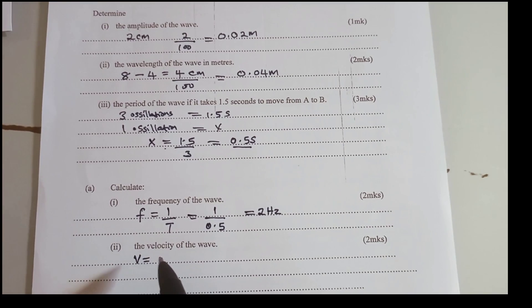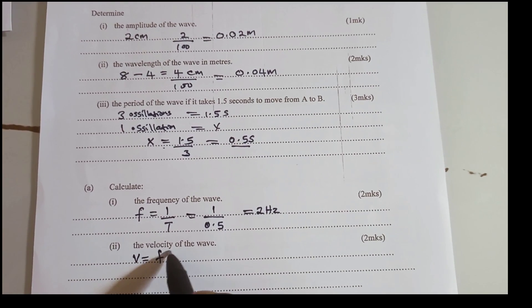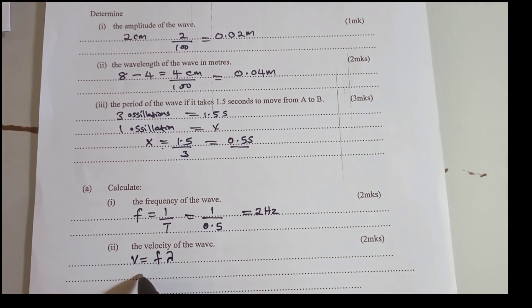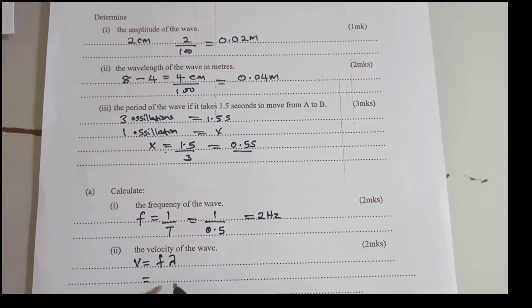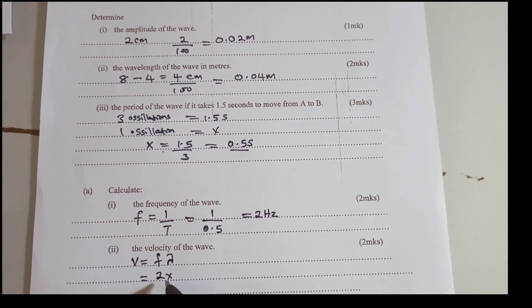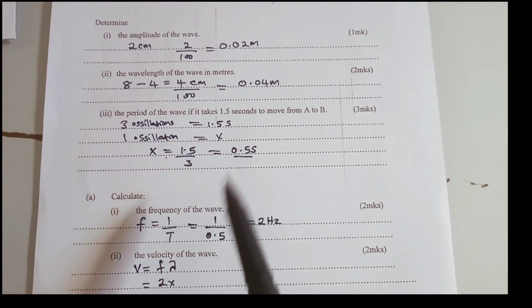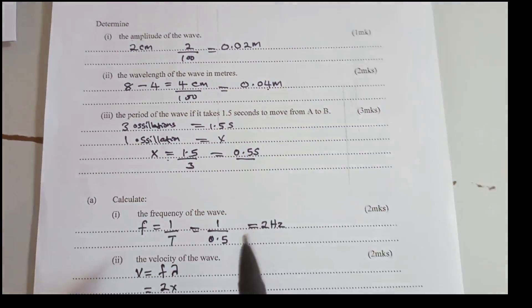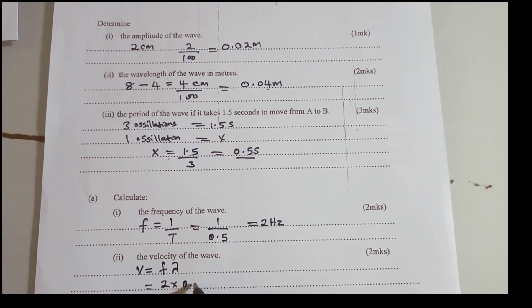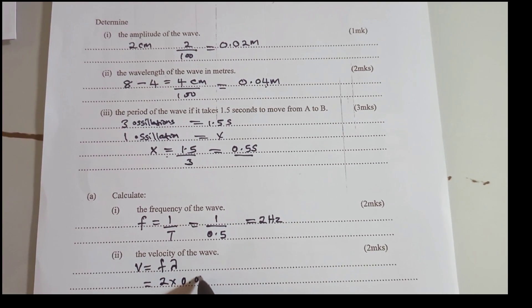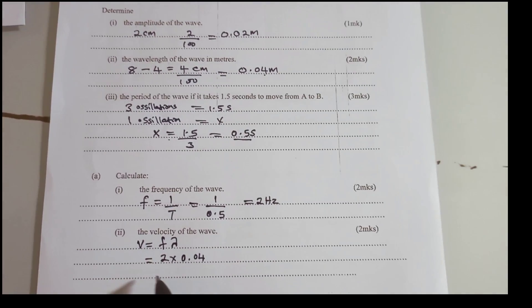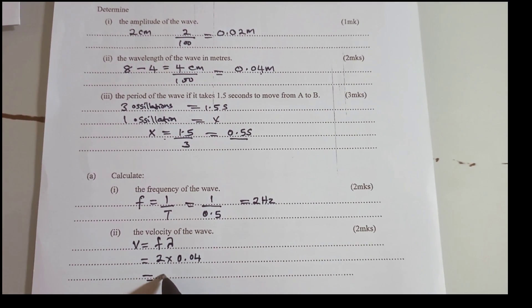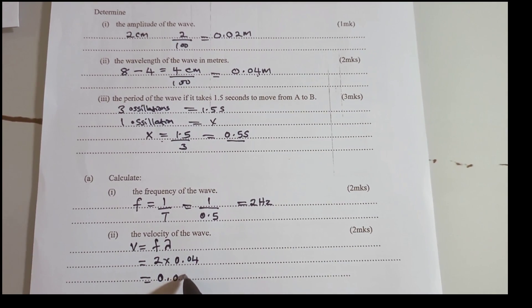Then we have the velocity of the wave equals F lambda. We have the frequency times the wavelength, 0.04. We will talk about 2 times 0.04 to get 0.08 meters per second.